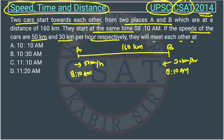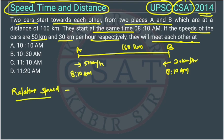In this kind of question, we use the concept of relative speed. Since the cars are coming towards each other, the speeds get added. So the relative speed will be 50 + 30 = 80 km/h.